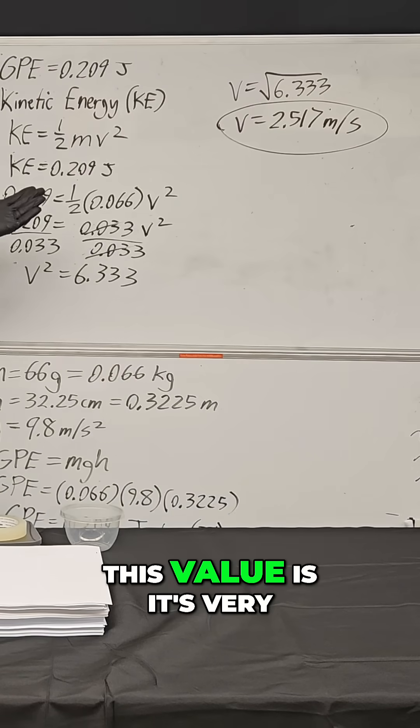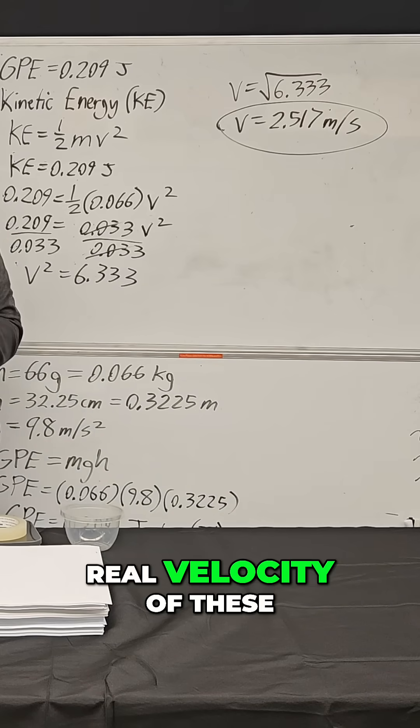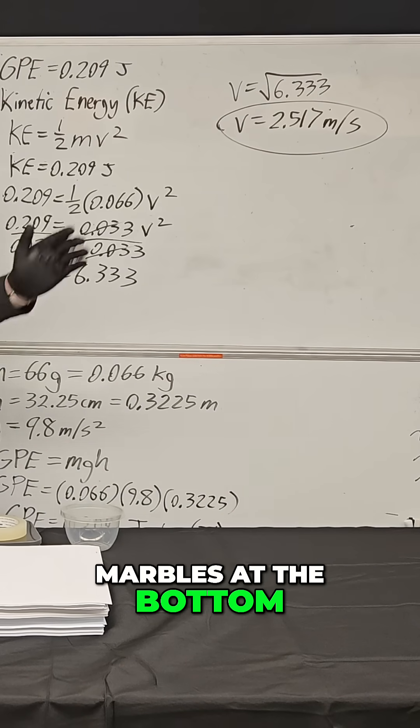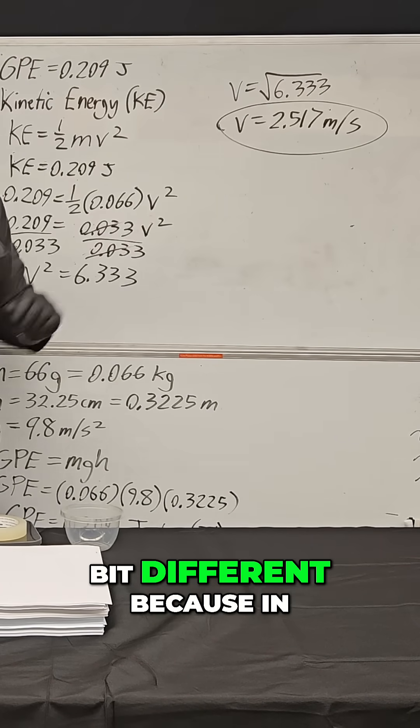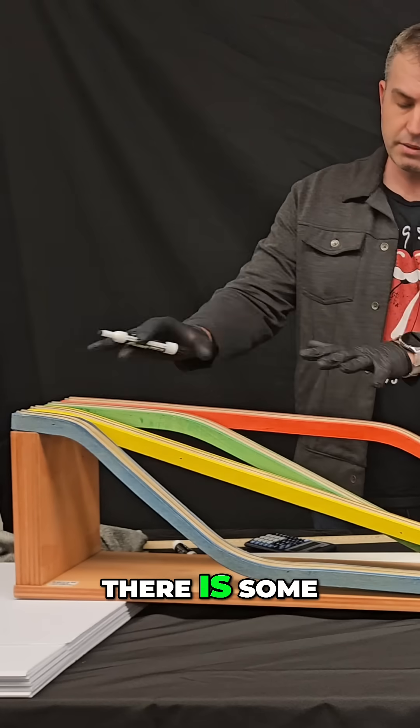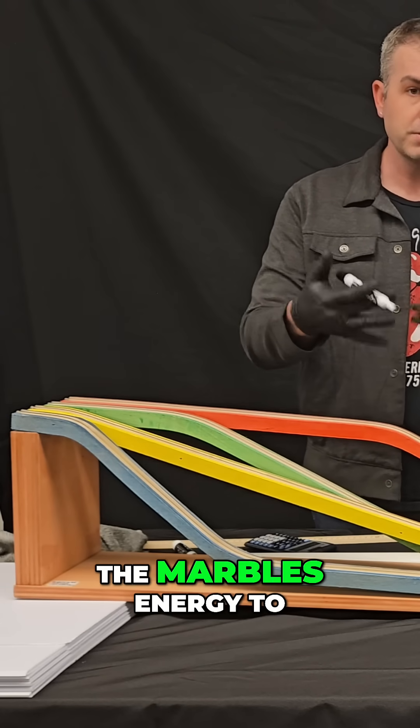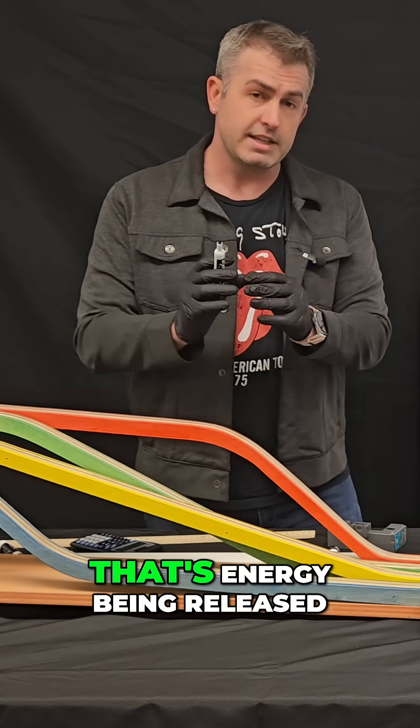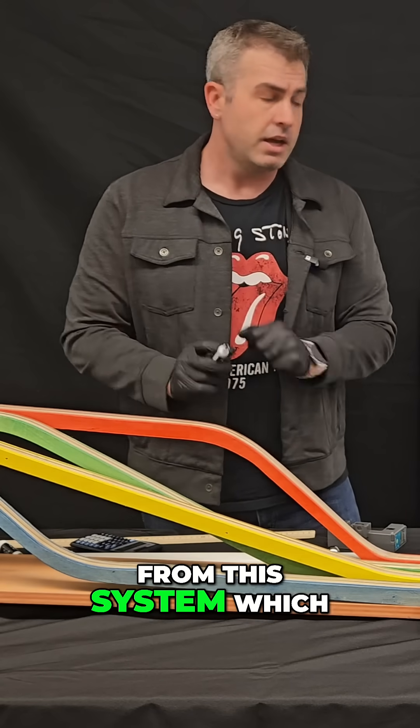What's remarkable about this value is it's very close to the real velocity of these marbles at the bottom. Now, it is going to be a little bit different because in reality there is some friction in the system. Friction causes some of the marble's energy to turn into heat, and that's energy being released from this system.